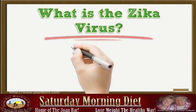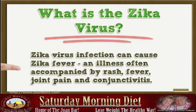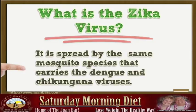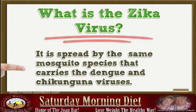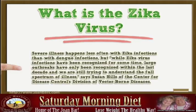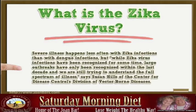What is the Zika virus? Zika virus infection can cause Zika fever, an illness often accompanied by rash, fever, joint pain and conjunctivitis. It is spread by the same mosquito species that carries the dengue and chikungunya viruses. Severe illness happens less often with Zika infections than with dengue infections, but while Zika virus infections have been recognized for some time, large outbreaks have only been recognized within the last decade and we are still trying to understand the full spectrum of illness, says Susan Hills of the Center for Disease Control's Division of Vector-Borne Diseases.